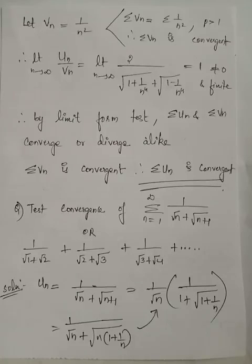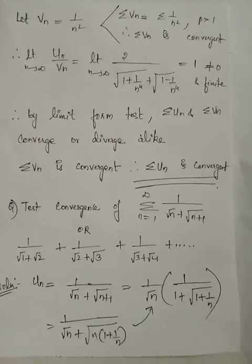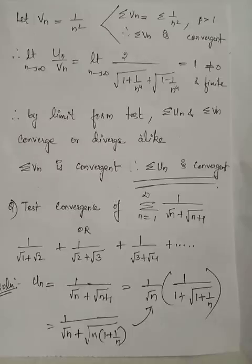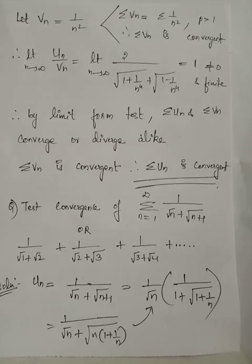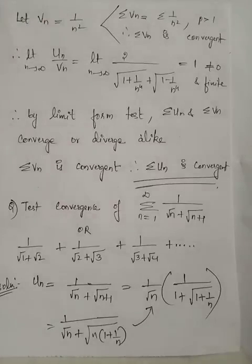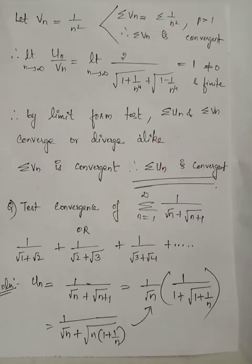Since the obtained limit for the ratio un by vn is non-zero and finite, the behavior of summation un and summation vn will be the same. Since summation vn, which is summation 1 by n squared, is convergent by the p-test, the given series summation un is also convergent.